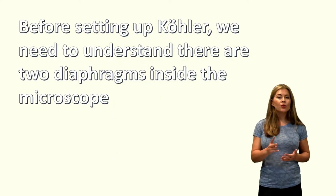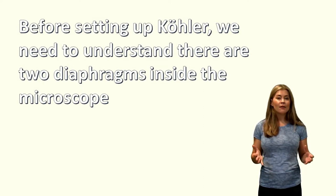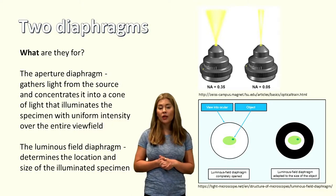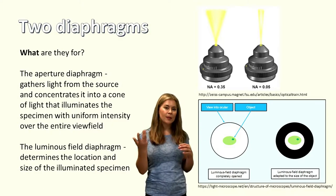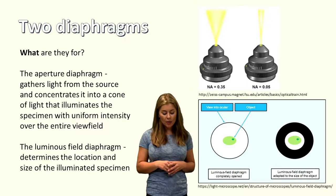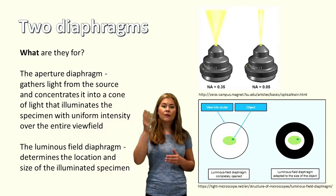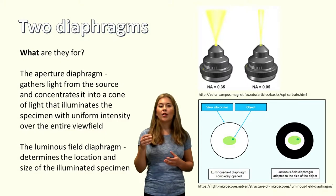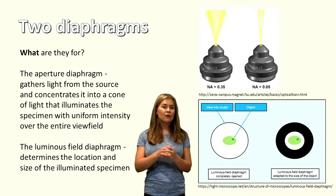Now I'm going to move on and describe the two diaphragms that are really important inside the microscope. So you can adjust the aperture of these diaphragms to get the perfect illumination of your specimen. So these two diaphragms, what are they for? The aperture diaphragm gathers light from the source and concentrates it into a beam with uniform intensity over the entire view field of your specimen. Whereas the luminous field diaphragm determines the location and the size of the illuminated specimen. So the top right image shows you the difference between a wide and narrow aperture diaphragm. And the bottom example shows you the difference between a completely open and somewhat closed luminous field diaphragm.